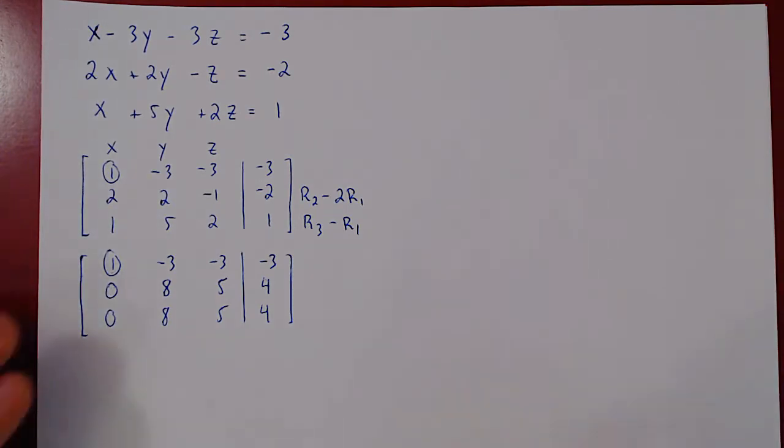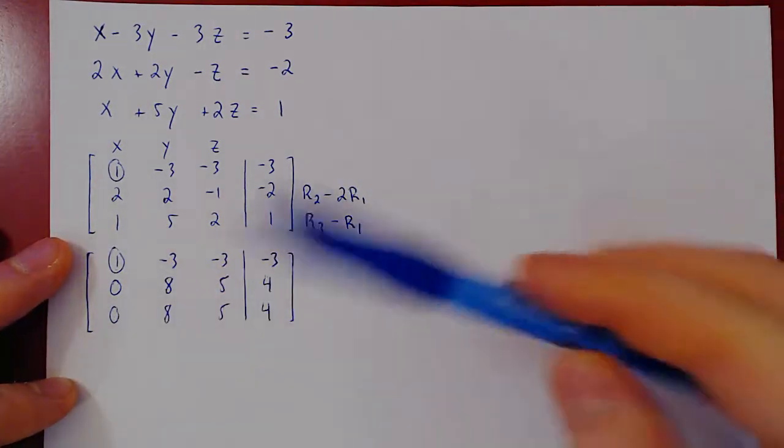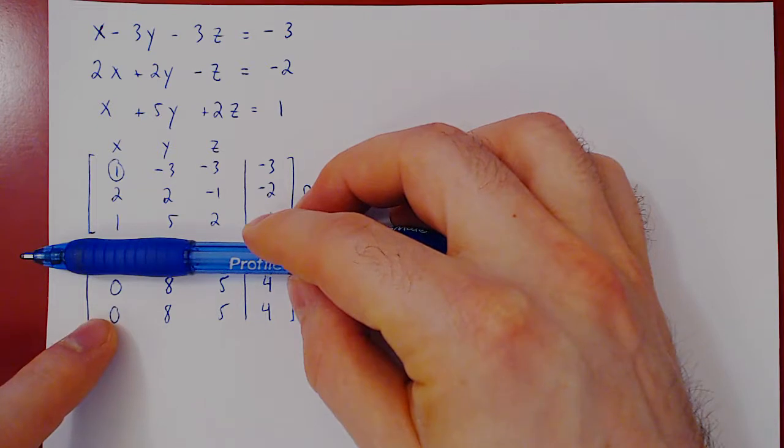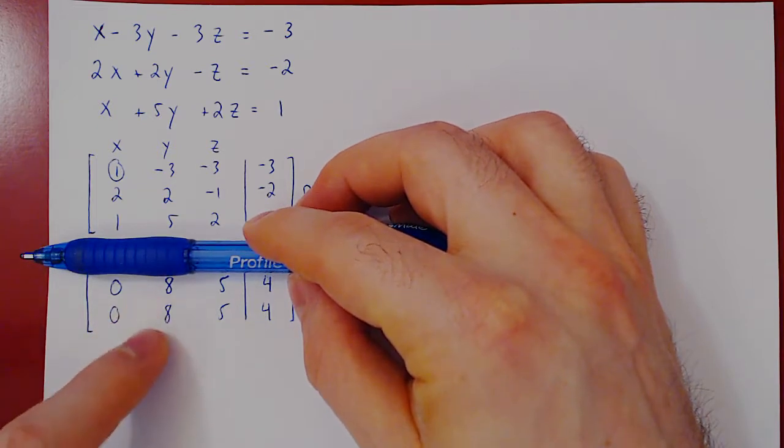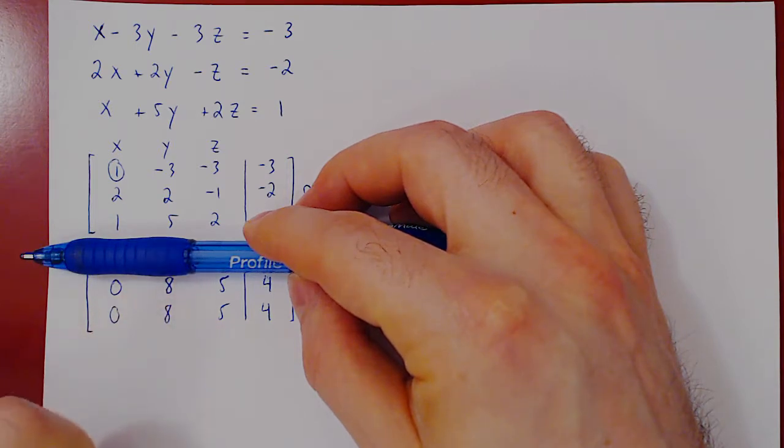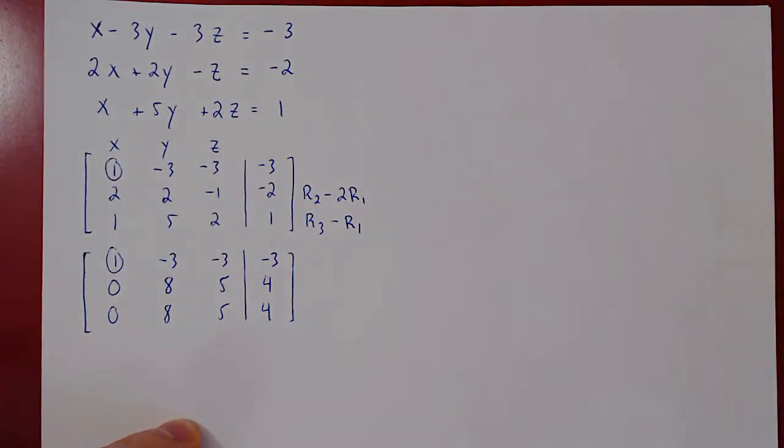So we've killed the entries below our first leading one. We ignore and repeat, we hunt for our second leading one. Well, it's not going to be here. Both entries are 8. So here we have no choice but to multiply row 2 by 1 over 8. But here we'll swap the order of our operations.